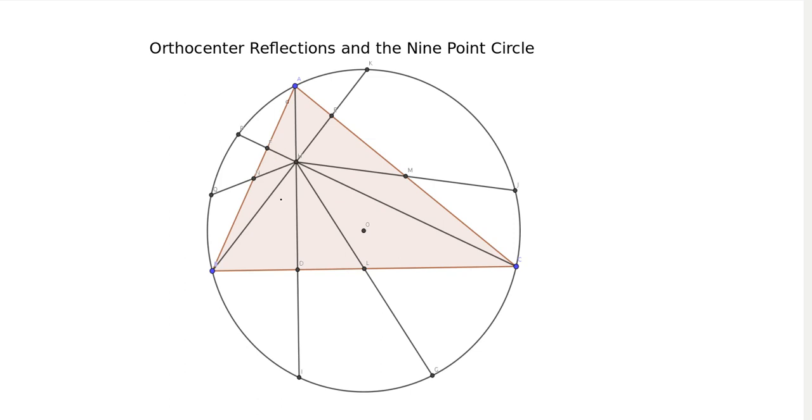So the 9 point circle is a circle which passes through 9 special points for any given triangle. It passes through the midpoints of each of the triangle sides. So here I've marked them as L, M, and N. It passes through the feet of the altitudes. So here that's D, E, and F.